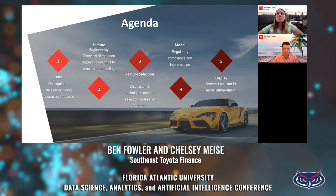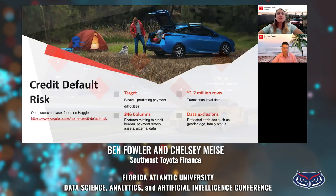Next, we'll talk about feature selection, which is a discussion of the techniques used to select the optimal set of features. Moving on, we'll talk about our actual final model, including regulatory compliance constraints and interpretation of the model. And finally, we're going to talk about displaying the model — we'll have an example with Streamlit, a solution for model interpretation.